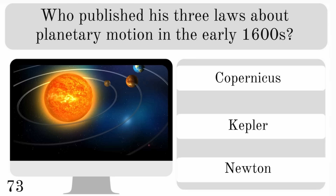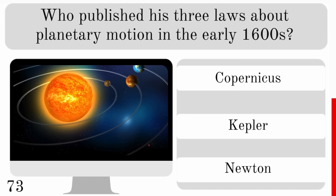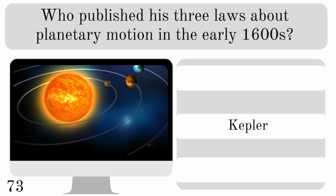Who published his three laws about planetary motion in the early 1600s? Copernicus, Kepler or Newton? And that was Kepler.